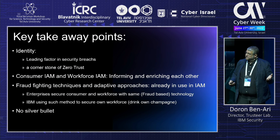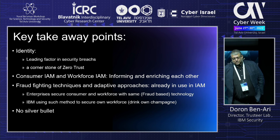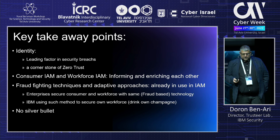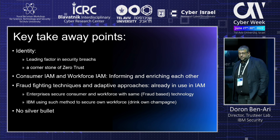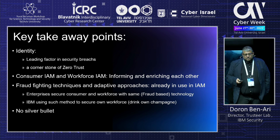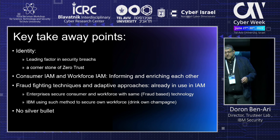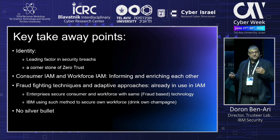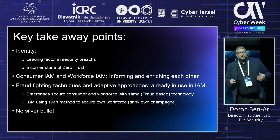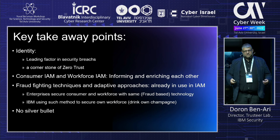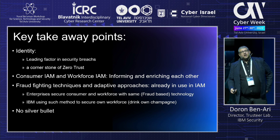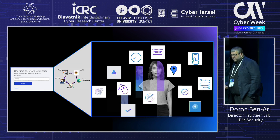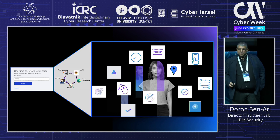Key takeaway points: Identity is a leading factor in security breaches and is the cornerstone of zero trust architecture. Consumer IAM and workforce IAM are informing and enriching each other. Fraud-fighting techniques from the fraud domain are making their way into identity and access management. Enterprises can secure both customers and employees using the same methods today. IBM itself, with around 280,000 employees, uses this technology — eating our own dog food. And finally: there is no silver bullet. Hopefully next time you're challenged with an MFA prompt, you'll have a greater appreciation for the battle going on under the surface — beyond fish and rocks.